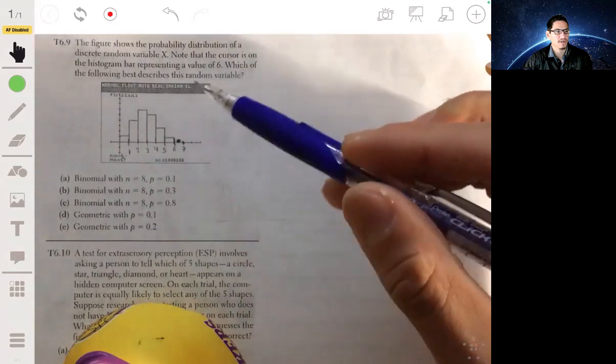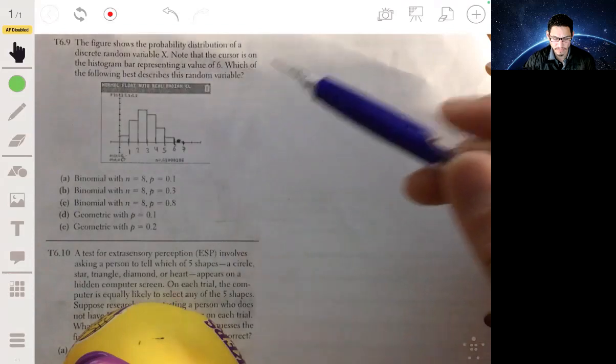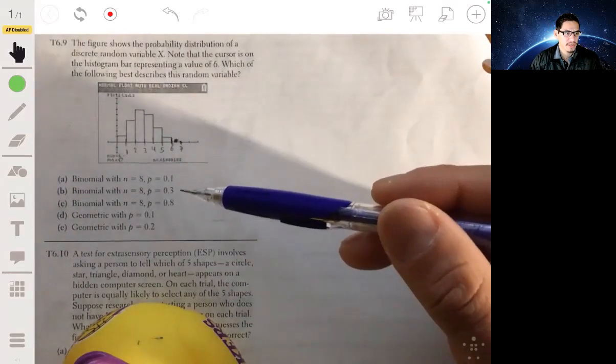We're essentially trying to figure out which of these best describes this random variable. So we first have to figure out if it's going to be binomial or geometric.